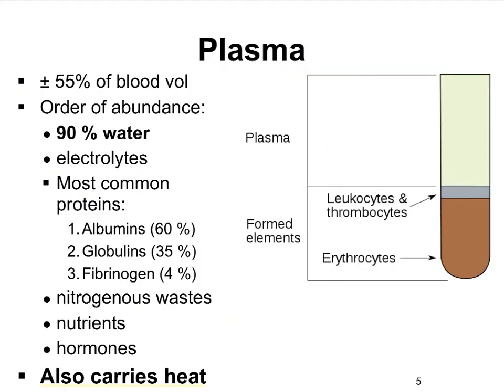The plasma makes up about 55% of our blood and is almost entirely water. Within the plasma we find many important proteins, electrolytes, heat, hormones, nutrients, and nitrogenous wastes such as uric acid and urea. Some gases are dissolved directly in the plasma, while many are not — we will focus on that later.